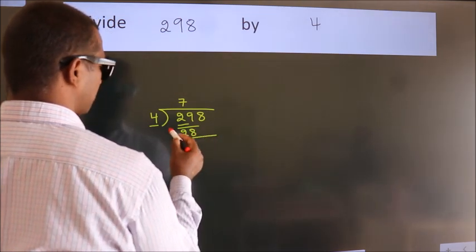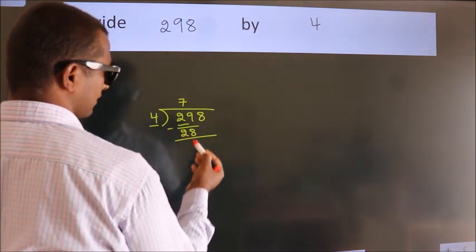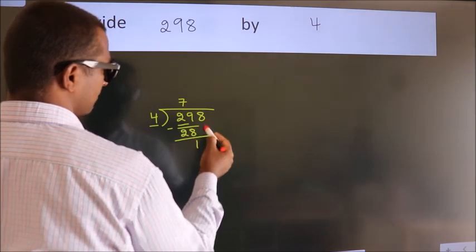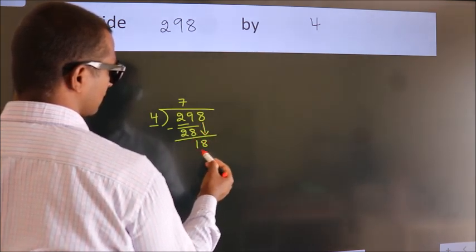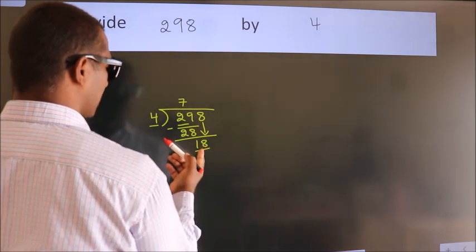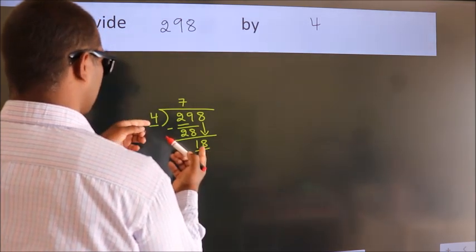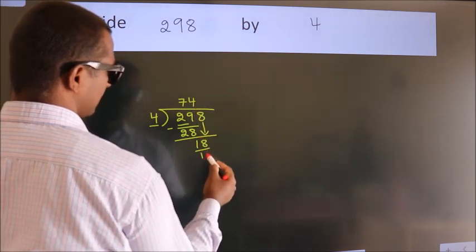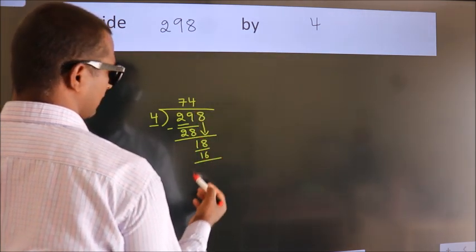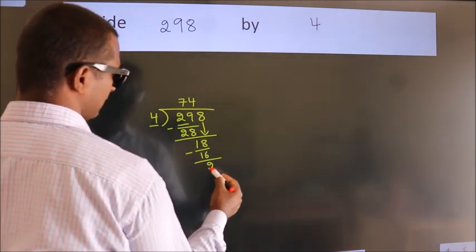Now we should subtract. We get 1. After this, bring down the beside number. So 8 down, making 18. A number close to 18 in the 4 table is 4 times 4 equals 16. Now we subtract. We get 2.